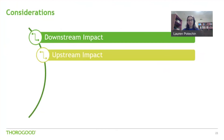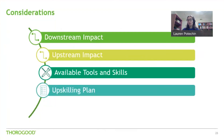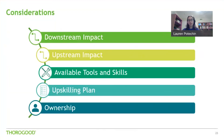On the other side is upstream impact — you may not think of this one at first, but changing your method may also change how you ingest data. Do you need to receive the data differently, and how much additional effort will be required by the upstream group? Then consider what tools are available in your company — are other groups already using tools like PowerApps and Power BI? We also have upskilling: this solution only works if your team is ready to use it. Do they need to learn a new process or tool, and who's going to teach them? Lastly, ownership: who manages the solution after it's built and who's going to improve on it?